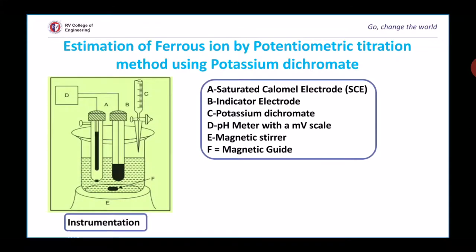The basic parts of potentiometry are saturated calomel electrode, indicator electrode, pH meter with a millivolt scale, magnetic stirrer and magnetic guide.